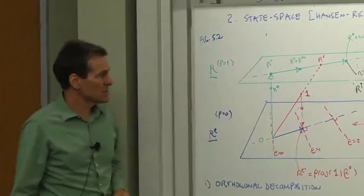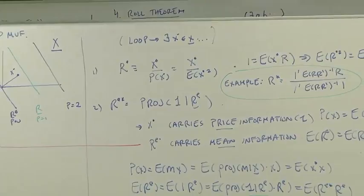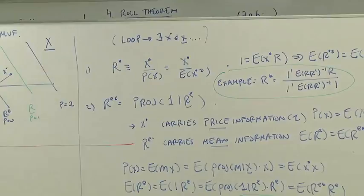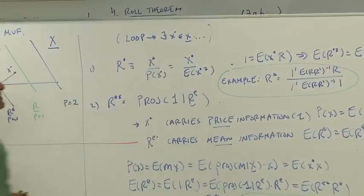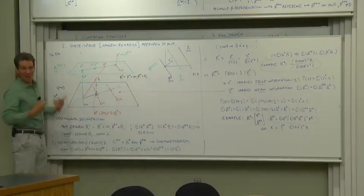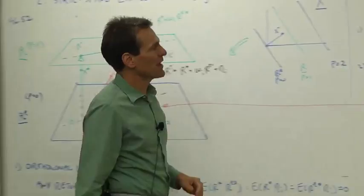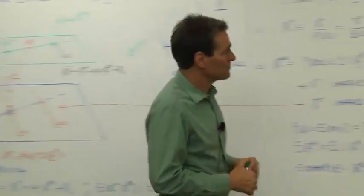Let's locate the mean-variance frontier in this state-space notation. We've got to introduce a few new friends. Our first new friend is r star. We know that there's an x star. We spent a week thinking about there exists an x star in x and so on. So from x star, let us simply define a return proportional to the payoff x star. We divide x star by its price, and that gives us a return r star. Graphically, we take x star, x star is a payoff, but it doesn't have price one. So we create a payoff of price one, r star, that's proportional to x star.